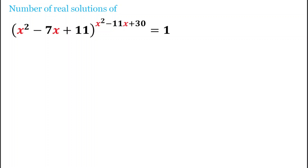Hello everyone. In this question we have to find the number of real solutions for this equation. The equation is (x² - 7x + 11)^(x² - 11x + 30) = 1. Here we have to find how many values of x satisfy this.